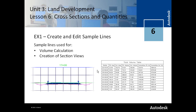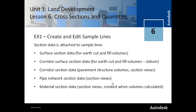Sample lines are lines that you associate with an alignment. When you create a sample line you attach section data to those sample lines. You can attach surface section data, which is used for earth cut and fill volume calculation. You can attach corridor surface section data — for example, you would attach the corridor datum surface section data to calculate earth cut and fill. The third type of section data is corridor section data, which allows you to calculate pavement structure volumes and shows the corridor in your section views.